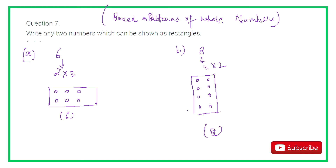Eight means 4 into 2, and six means 2 into 3. You can also write nine as 3 rows and 3 columns, or ten as 5 rows and 2 columns — five twos are ten. So you can write many numbers in the form of rectangles. These are patterns of whole numbers and an important exam question.